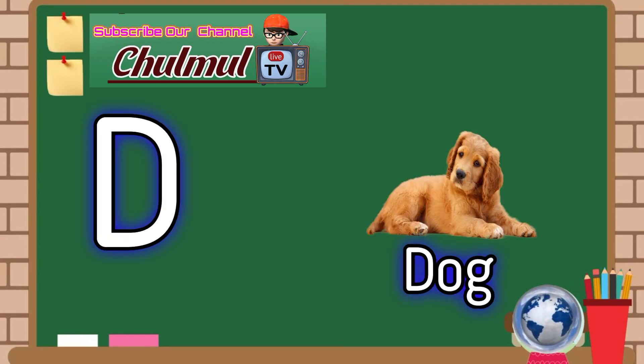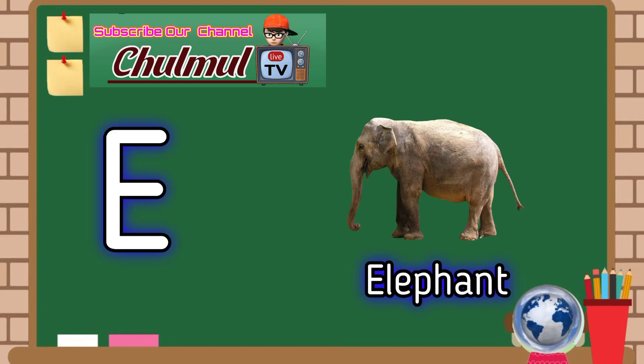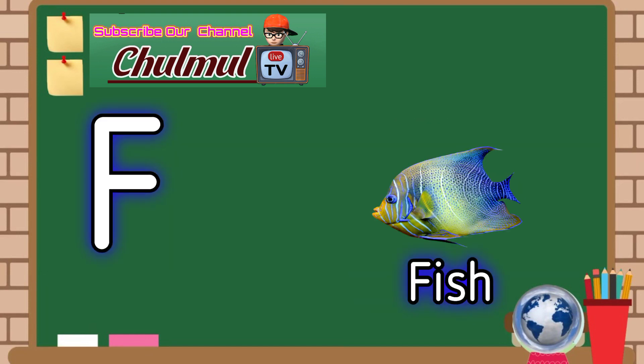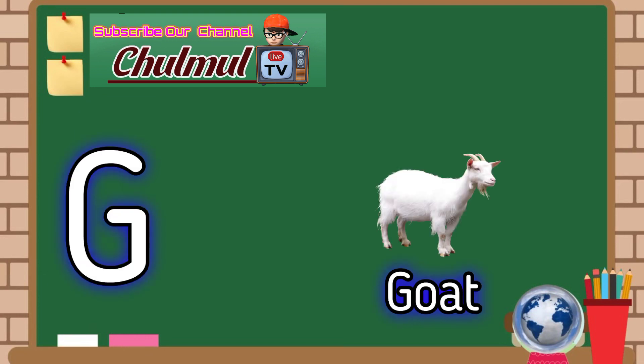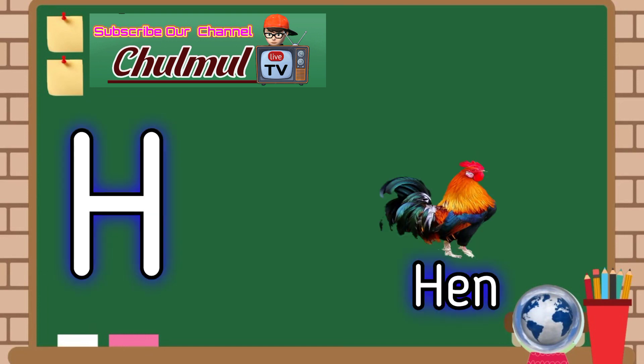E for elephant, F for fish, G for goat, F for hen.